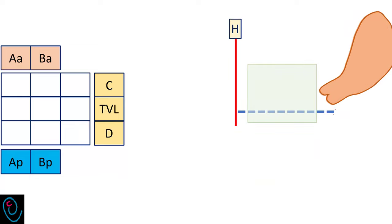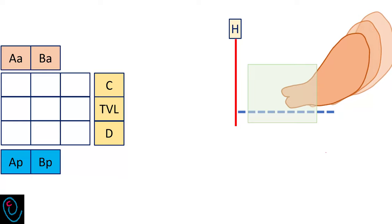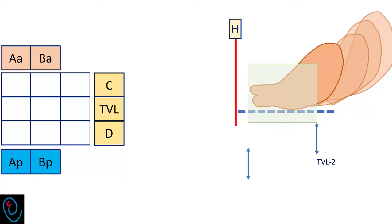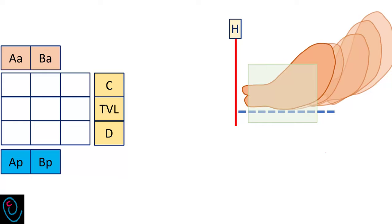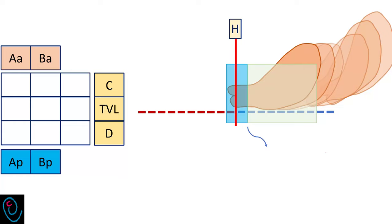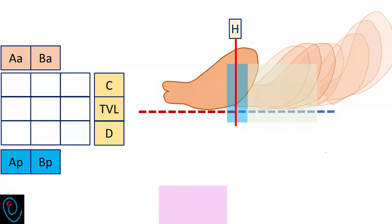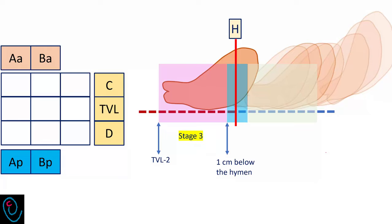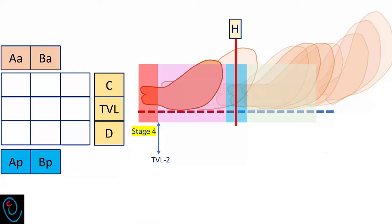Now we know the total vaginal length, and we can assess TVL minus 2. With straining, the apical compartment can descend. Any descent in the area between TVL minus 2 and 1 cm above the hymen is considered stage 1. Descent between 1 cm above and 1 cm below the hymen is stage 2. Further descent between 1 cm below the hymen and TVL minus 2 is stage 3, and descent beyond TVL minus 2 is stage 4.